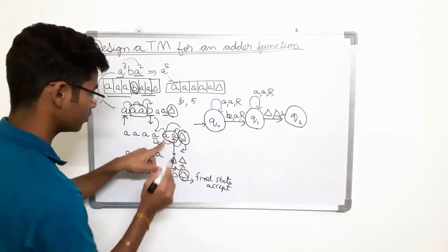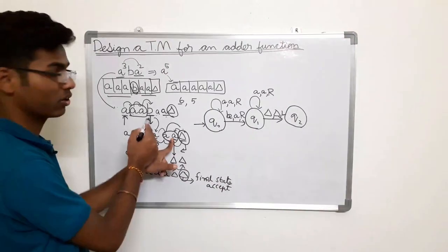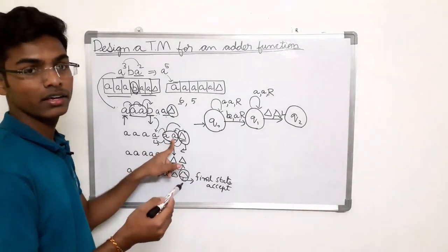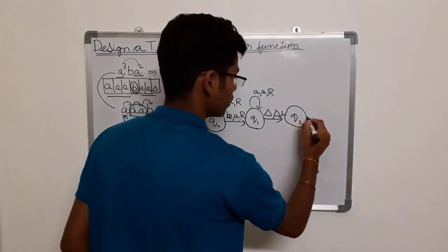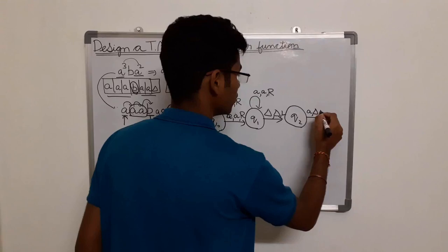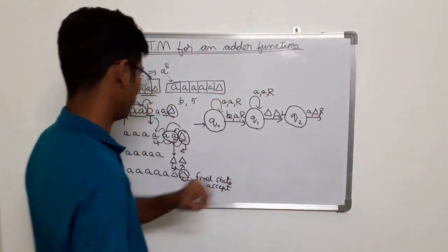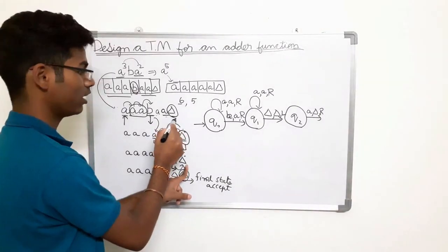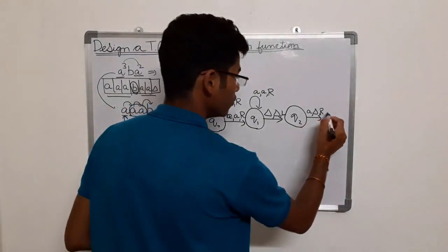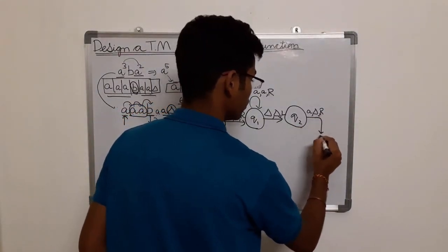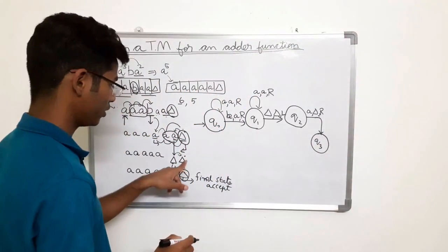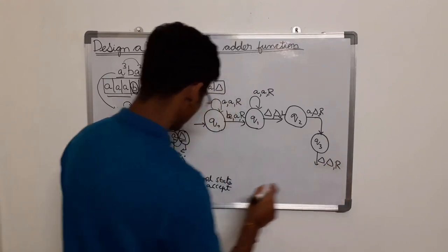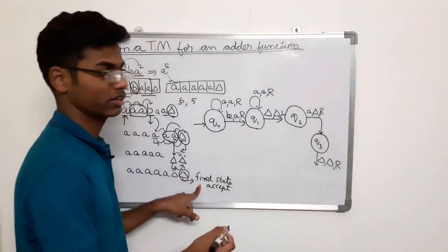Now you are at state q2. The goal is to make this small a as delta, because since we added an extra a earlier we must balance it by removing one a. Make this small a as delta and move towards right. When you are at this position you have reached delta again — now move right towards the final state.